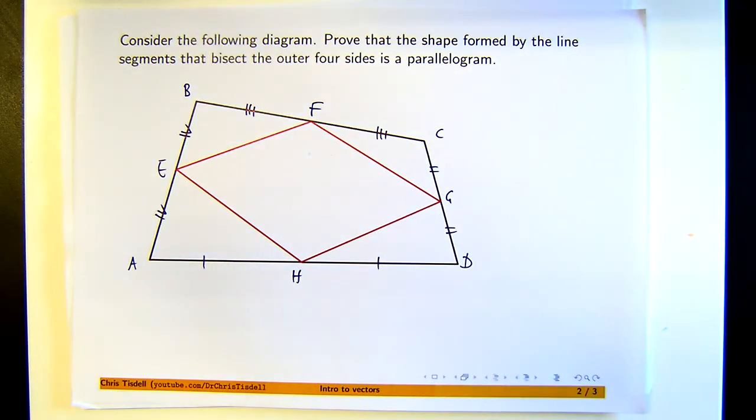Now, using vectors, how can I prove that that red shape is a parallelogram? How can I actually do it using vectors? What would be sufficient to show that that's a parallelogram?